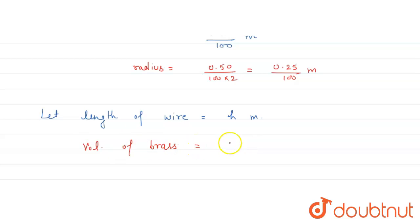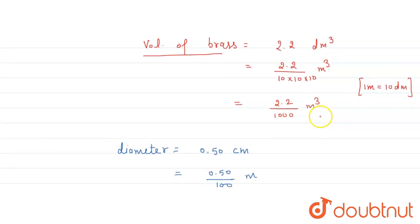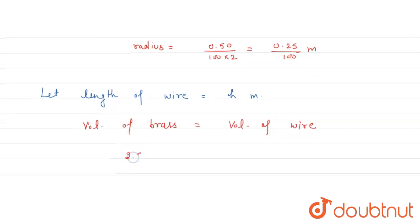What is volume of brass? 2.2 upon 1000 meter cube. This is equal to the volume of wire.